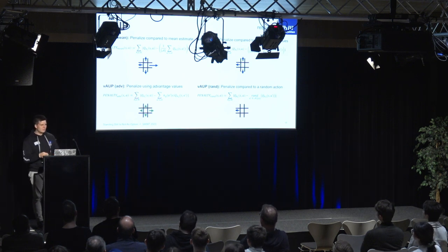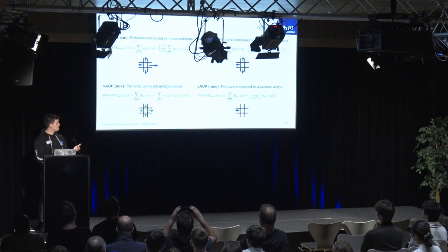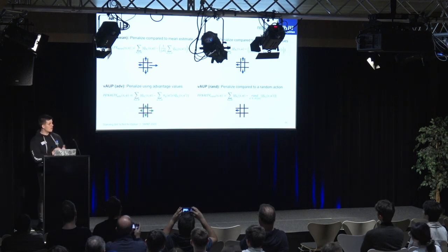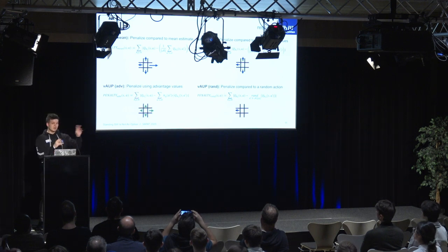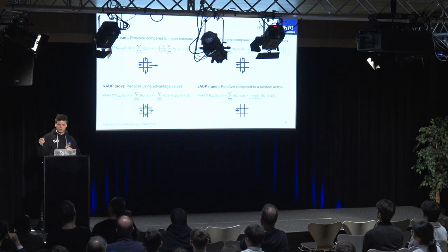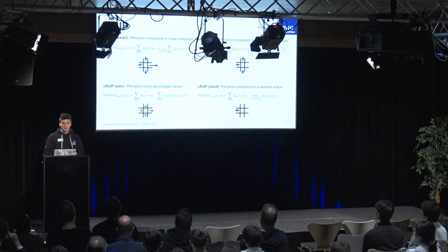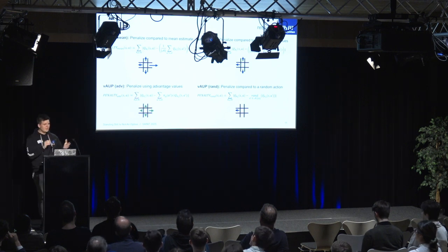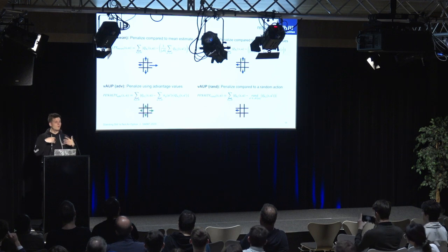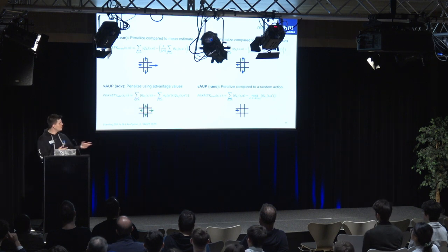We developed a variation-based approach to AUP — vAOP — which also works in action-driven environments. We developed four variations: first, a mean variant with a penalty compared to the mean auxiliary action values; second, an 'other' variant which is the same but excludes the chosen action from the penalty, leading to a higher penalty when the agent approaches an optimal policy; third, an advantage function variant using advantage values as the penalty; and fourth, a 'rand' variant which uses a random action other than the chosen one for the penalty, so the chosen action can't be completely neglected.